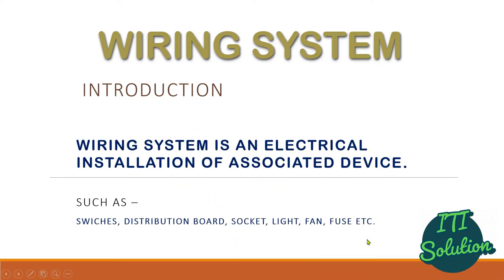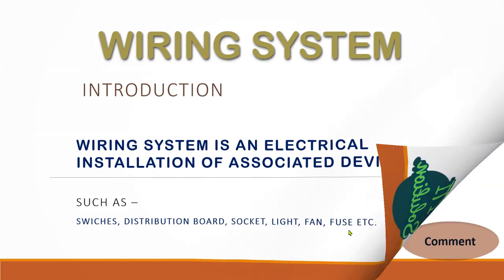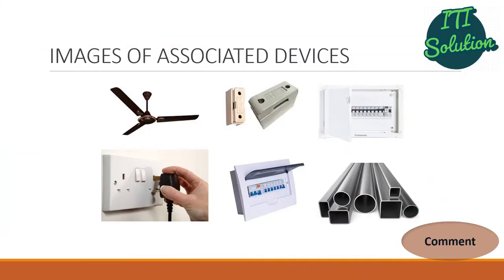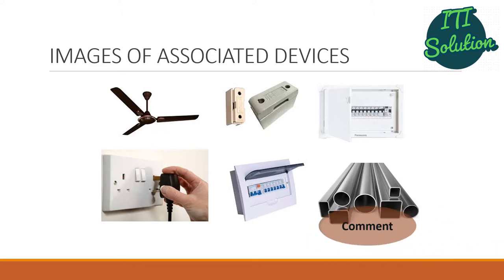Wiring system is an electrical installation of associated devices such as switches, distribution board, socket, light, fan, fuse, etc. Here we have some pictures of those associated devices. You can tell me the name of associated devices which are used in wiring system in the comment section.